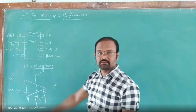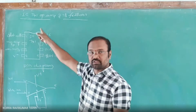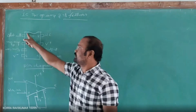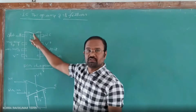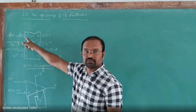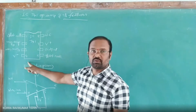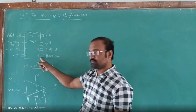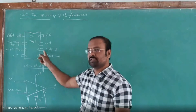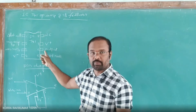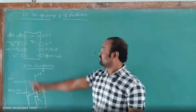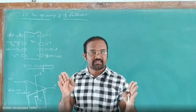Pin four is negative power supply. Starting from the U-shape notch on the left side, pin numbers start one, two, three, four — then from the bottom right side, pin five is the output offset null pin, and pin six is where we take the output. Pin seven is positive power supply.